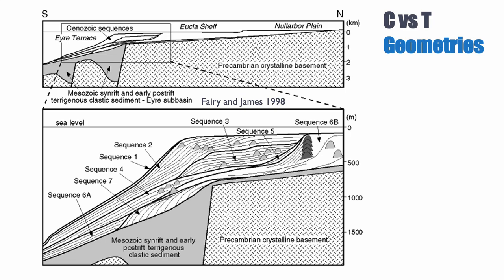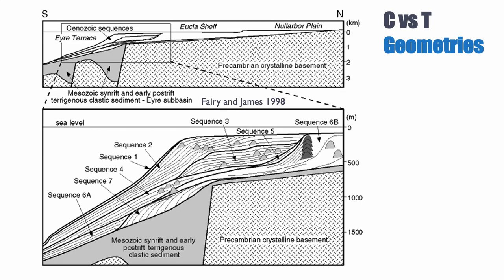In terms of geometry for the C factory, compared to the T factory, it's actually quite different. The C factory, because it lacks mud and the ability to be cemented early, will end up acting very much like clastics. Looking at the Euclid shelf, we see mostly C factory deposits that form broad clinoformal geometry, except for sequence 6b, where we can see clearly some steep-sided geometry and an important stacking pattern.